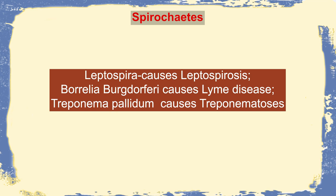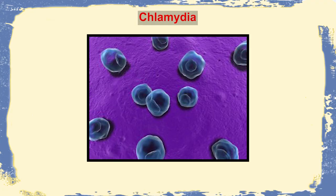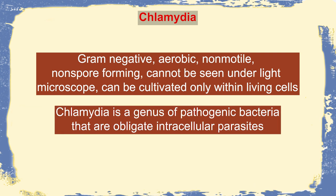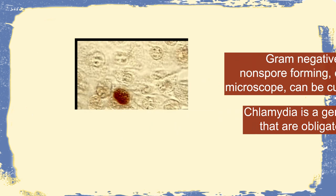Organisms in the Spirochetes category include Leptospira, Borrelia burgdorferi, and Treponema pallidum. Next come Chlamydia — a genus of bacteria that are obligate intracellular parasites. They are Gram-negative, aerobic, non-motile, non-spore-forming, and cannot be seen under a light microscope. They can only be cultivated within living cells. Species include Chlamydia trachomatis.